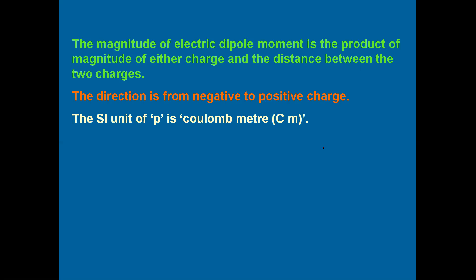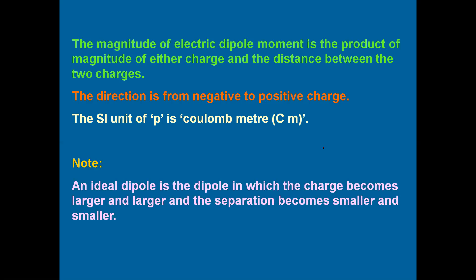While doing derivations, we always speak about an ideal dipole. An ideal dipole means that the charges have to be as large as possible and the separation between the two charges has to be as small as possible. In other words, the charge becomes larger and larger while the separation becomes smaller and smaller.